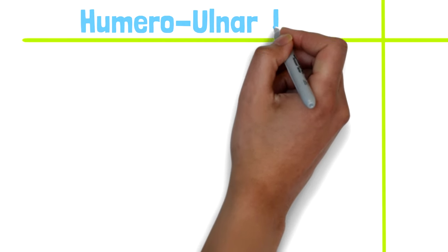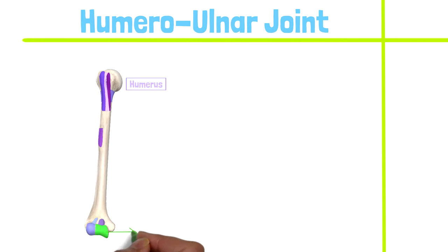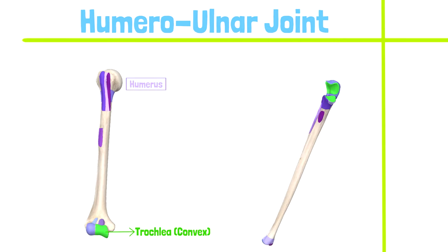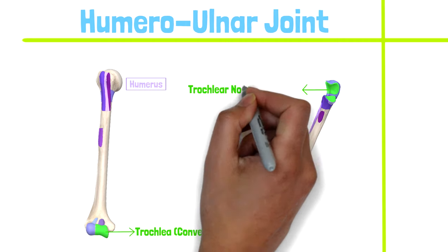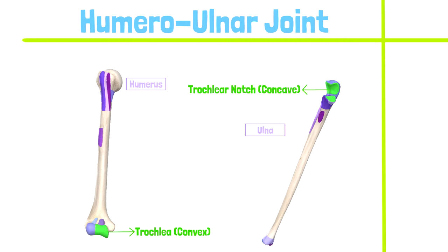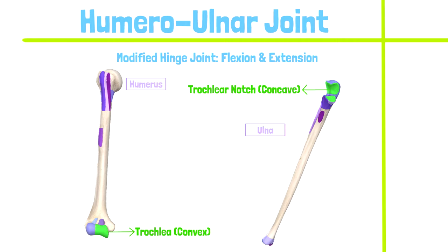Humeral ulnar articulation is composed of a convex trochlea of the humerus and a concave trochlear notch of the ulna. The joint is typically classified as a modified hinge joint with one degree of freedom: flexion and extension.